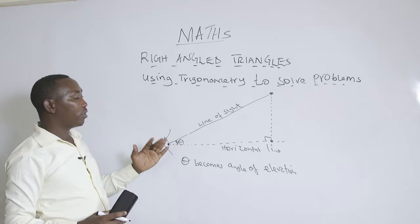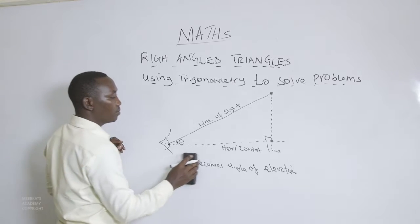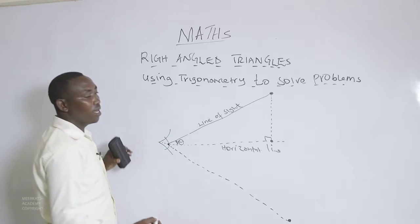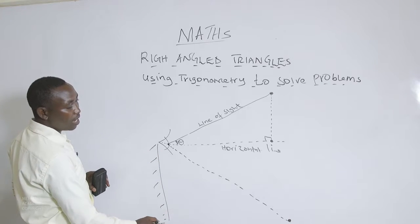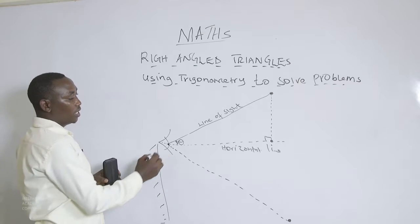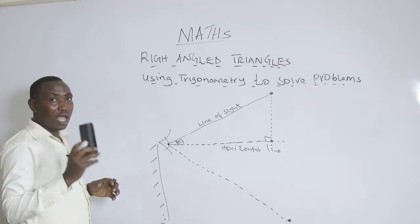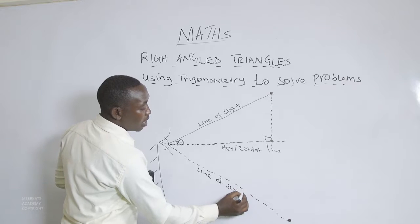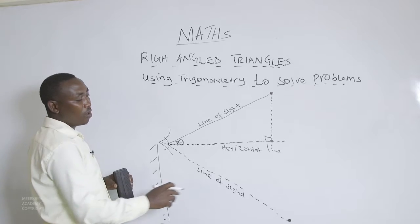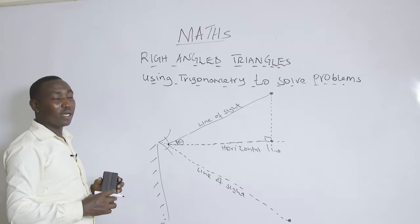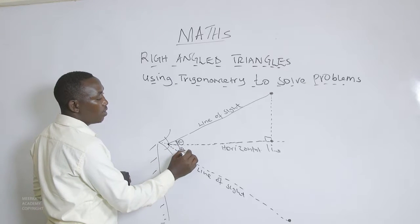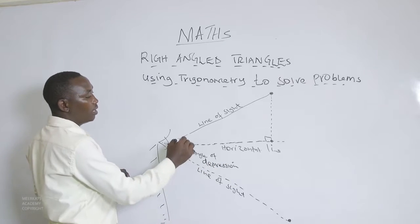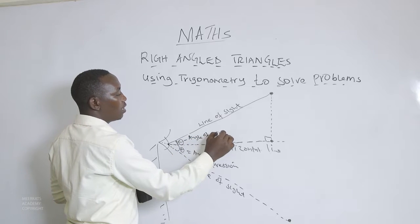There is an angle made between the line of sight and the horizontal line. Because this angle is measured upwards, we refer to it as the angle of elevation — so theta becomes the angle of elevation. If the same person is on top of a cliff looking downwards at an object, the horizontal line is still the reference and the line of sight goes downward. The angle between the horizontal line and the line of sight in this case is referred to as the angle of depression.